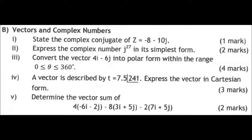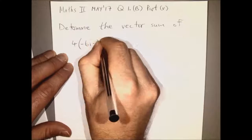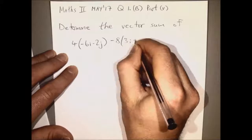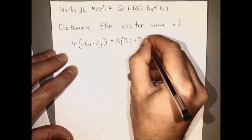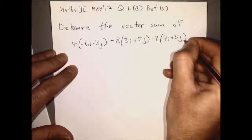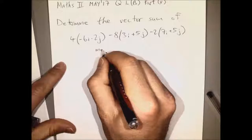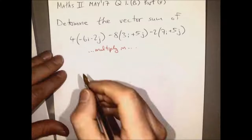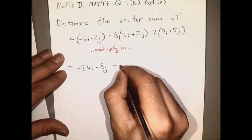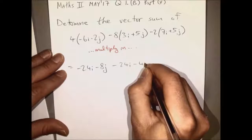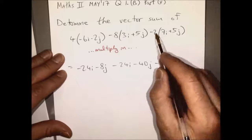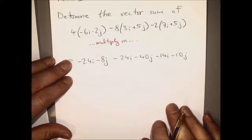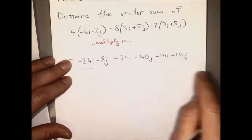Part 5: determine the vector sum of 4 times that, minus 8 times, and minus 2 times the contents of the third set of brackets. We just multiply in the number each time, so 4 times minus 6i is minus 24i, 4 times minus 2j is minus 8j, etc. Same style for the next two pieces.